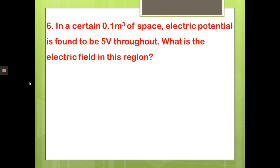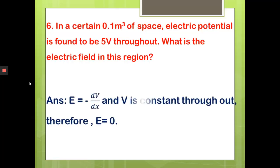So using E equals −dV/dx: since V is constant, dV equals zero, and therefore E equals zero. This is a clear application of the relationship between electric field and electric potential.